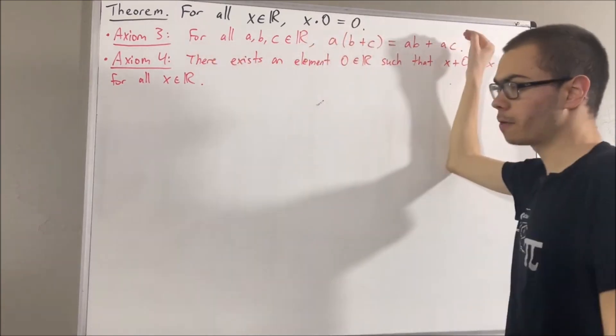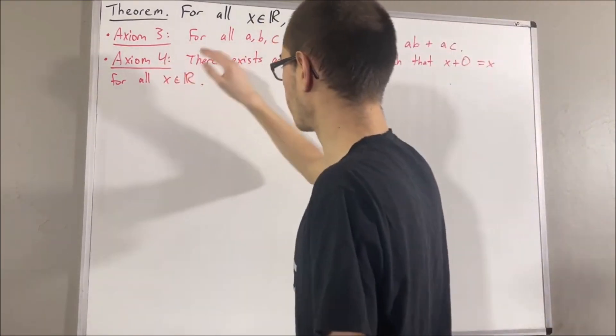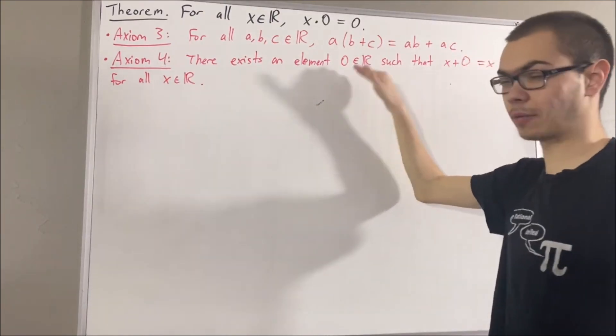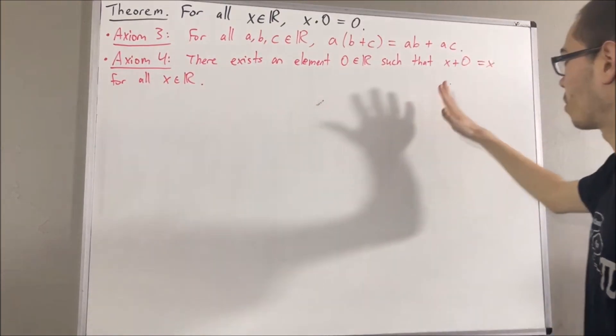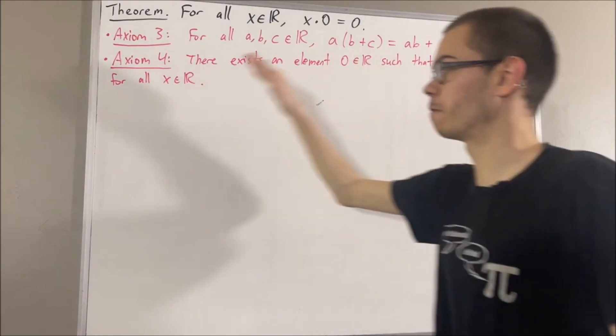Axiom 3 is just the distributive law. Axiom 4 tells us that there exists a real number that we call 0 that has the property that x plus 0 equals x for all real numbers x.